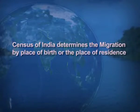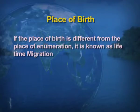Further modification was made in the year 1981, where information on the reasons for migration was incorporated. The census of India determines migration by place of birth or the place of residence. If the place of birth is different from the place of enumeration, that is known as lifetime migration.